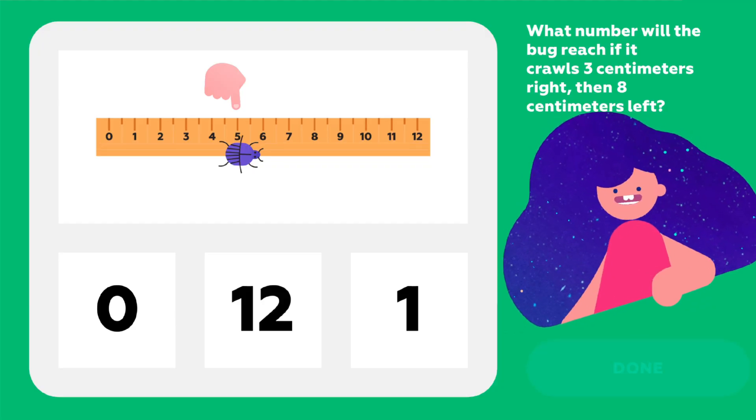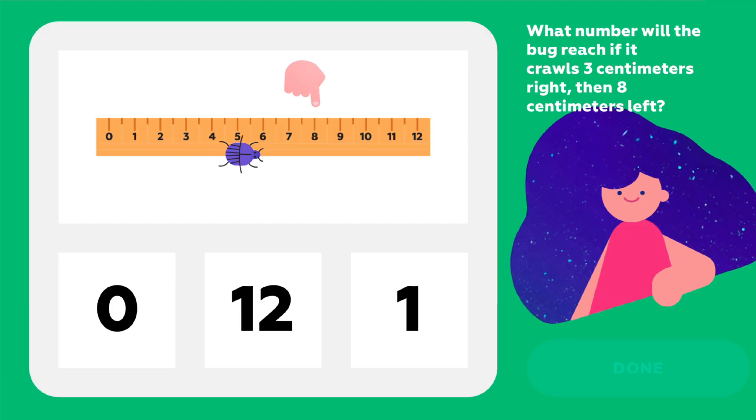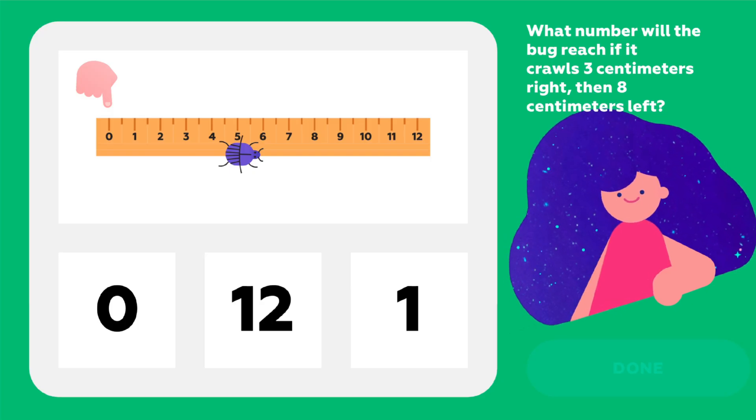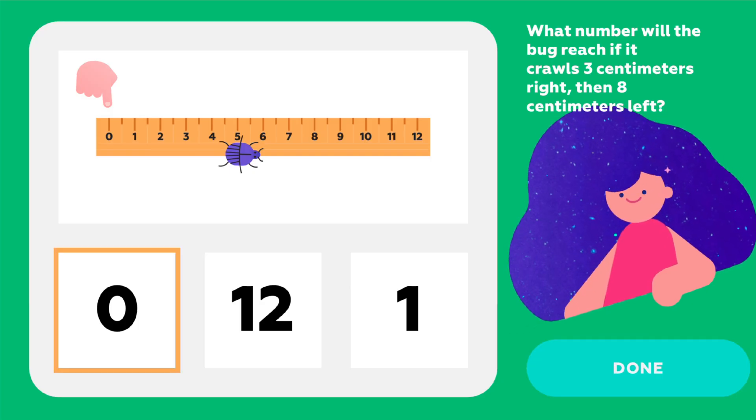If the bug walks 3 steps to the right, it will land on 8. And if it goes 8 steps to the left from 8, oh wow, it will go all the way back to the start of the ruler. That means zero. Zero. Right?